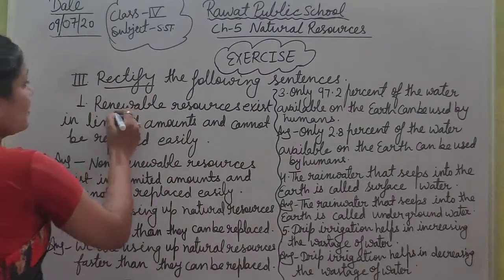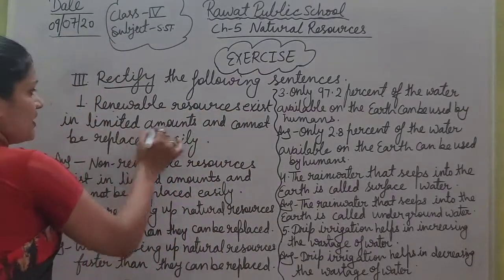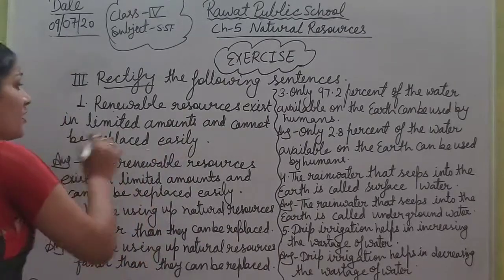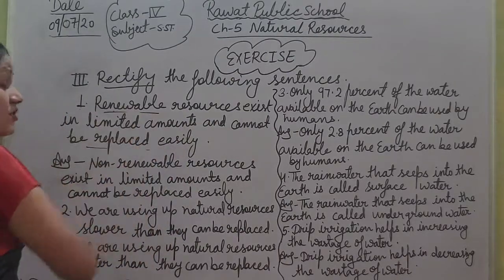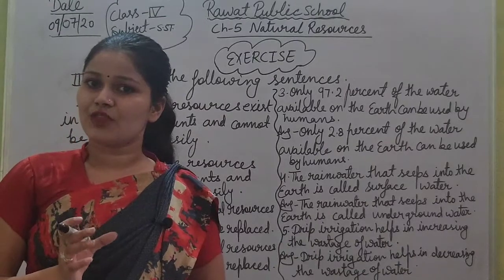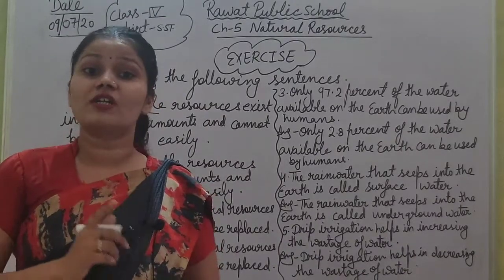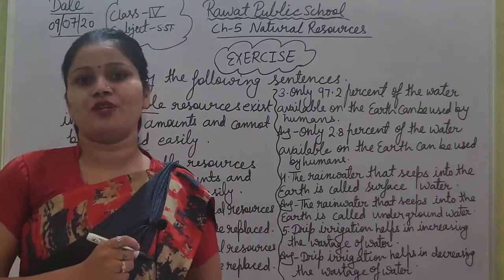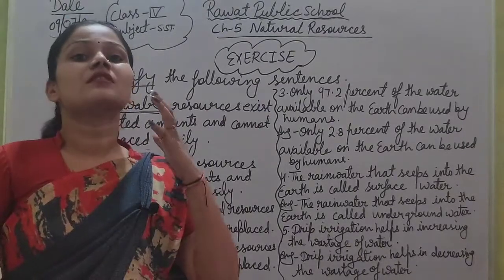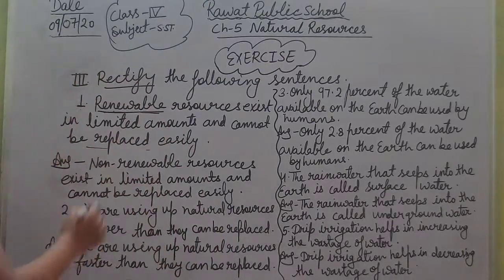The first sentence is: 'Renewable resources exist in limited amounts and cannot be replaced easily.' Renewable resources cannot be replaced — this is wrong. Non-renewable resources cannot be replaced. So we will write non-renewable in the place of renewable.